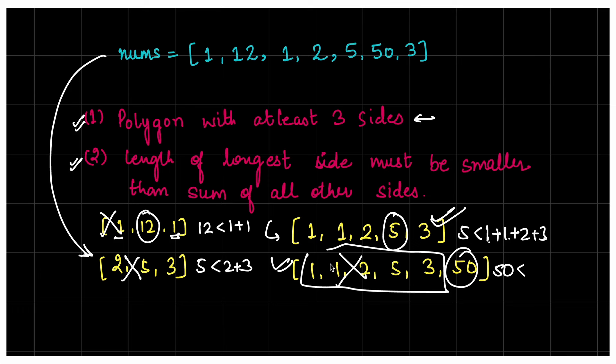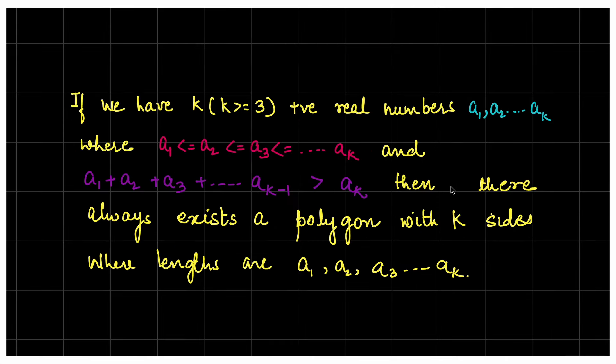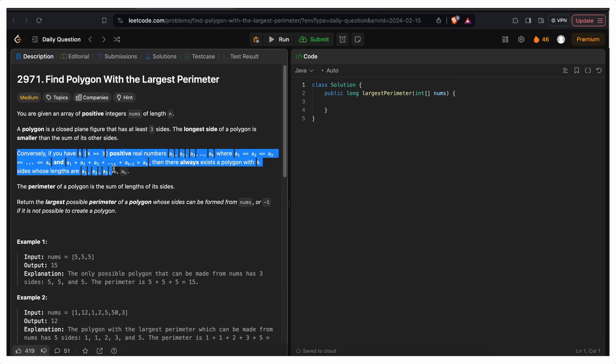I hope we now understand how to check whether a polygon can be formed from given sides. Our task is to return the largest perimeter of such a polygon. The problem statement itself contains a hint to the solution. Let's go back to the board.